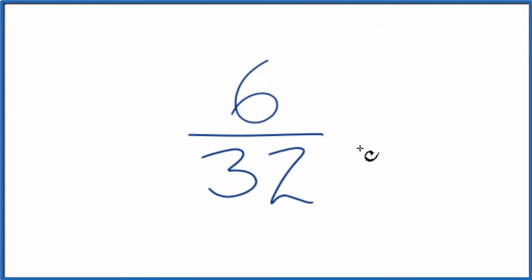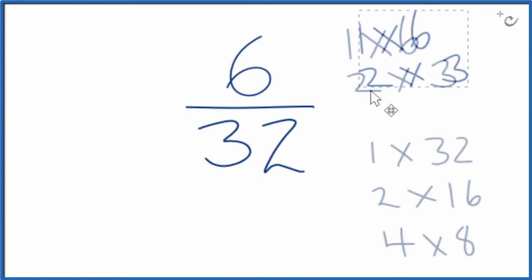We should look at the factors for 6 and 32, then find that greatest common factor. Here are the factors for 6 and 32.